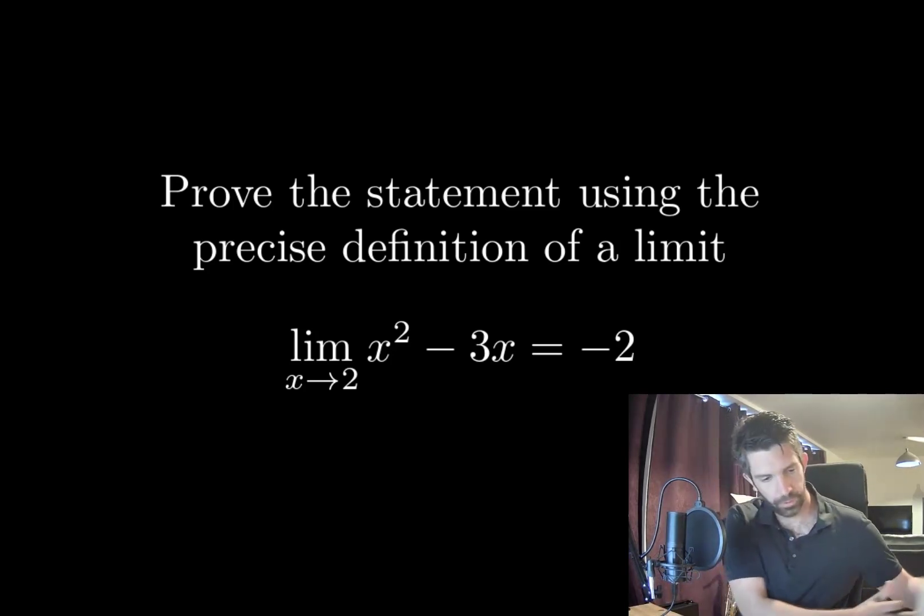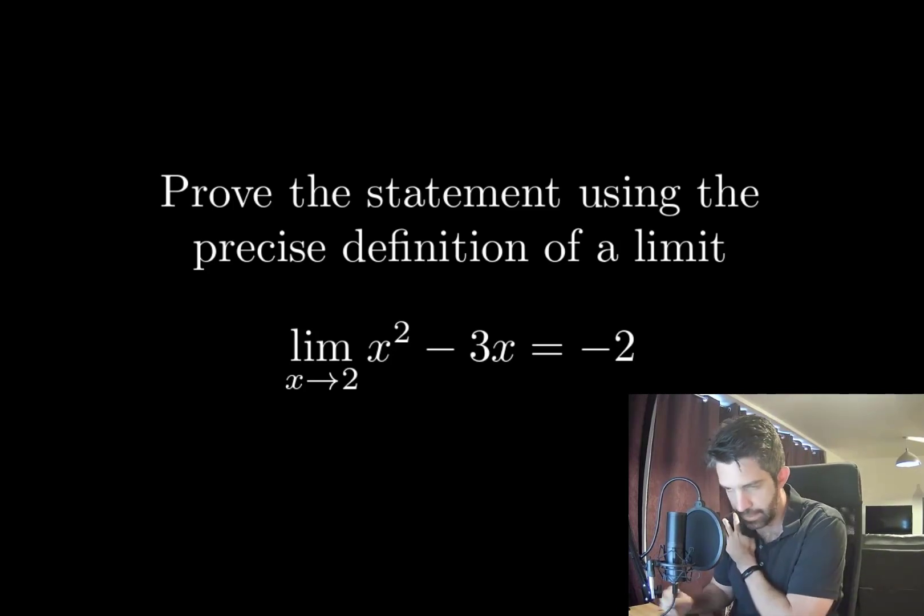Okay, so if we didn't have to use the precise definition of a limit, it's just a polynomial, so we know that we have continuity. We could just substitute x equals 2. But we're going to have to use the delta epsilon approach to showing that this statement is correct.